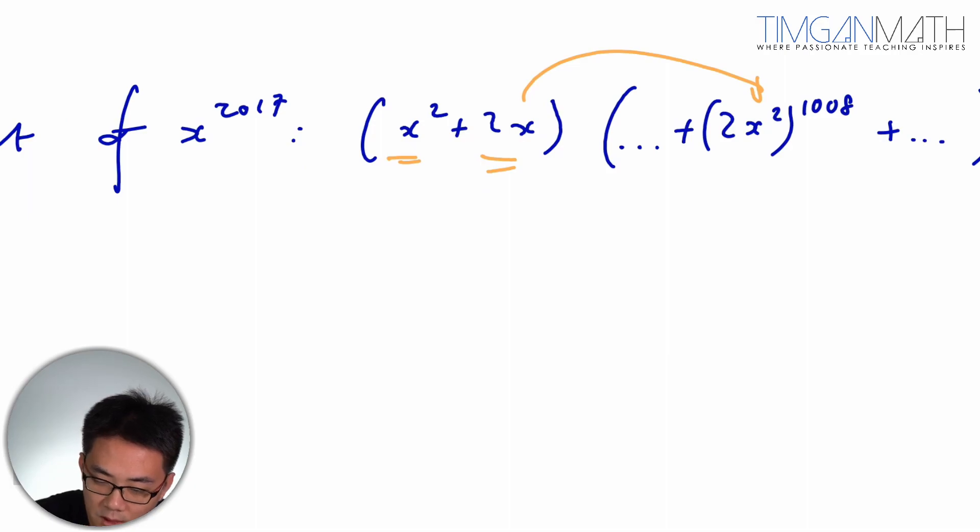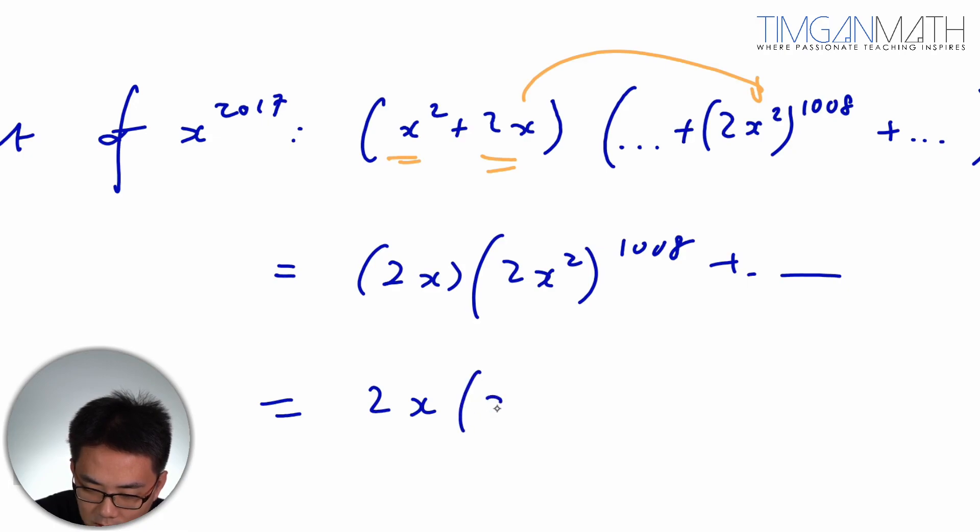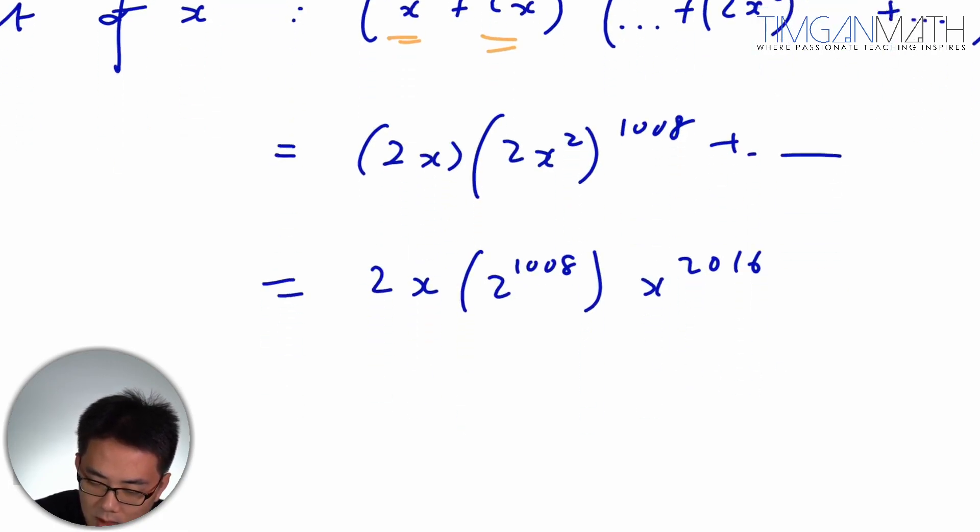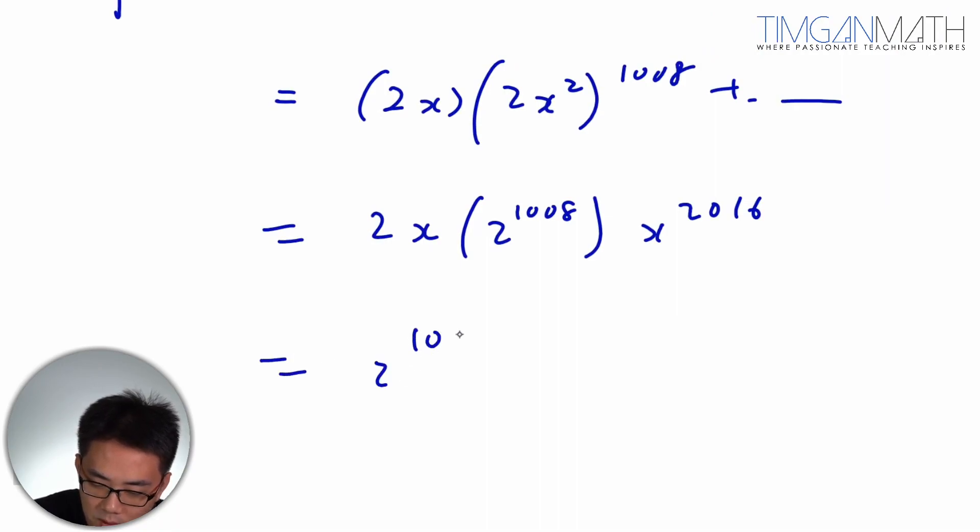So hence this will be 2x multiplied with (2x^2)^1008. This will be 2x times 2^1008 times x^2016, and that will give us 2^1009.